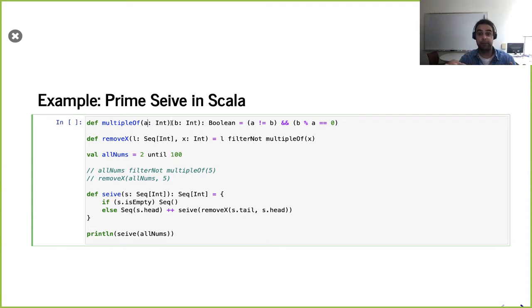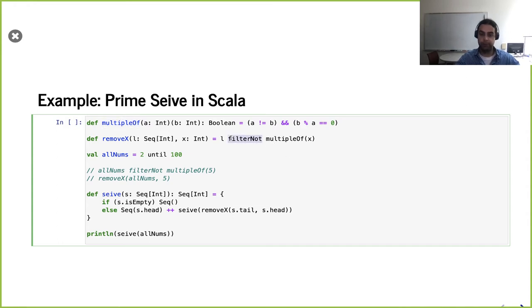We're going to use some features we covered this week. Starting off, this multipleOf function takes in two arguments using currying syntax — two separate argument lists — taking in two numbers and giving us a Boolean. We're saying if they're not equal and a does not evenly divide b, then we call it a multiple of it. And then we can use filterNot to remove everything that is a multiple of something. So this function, given a list and a number, removes all multiples of that number.